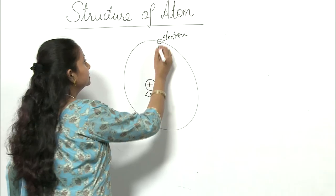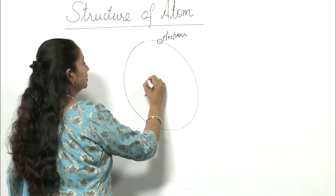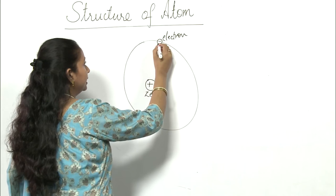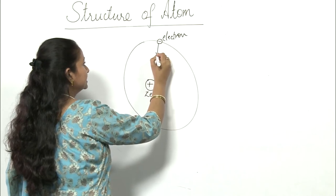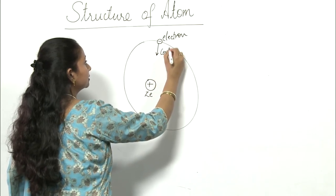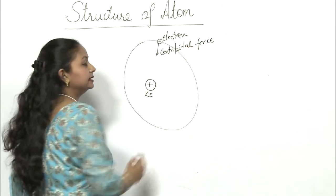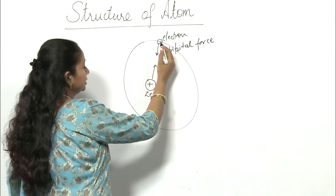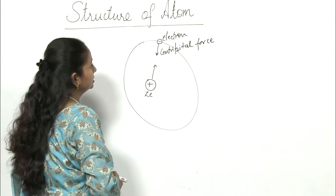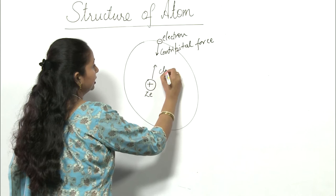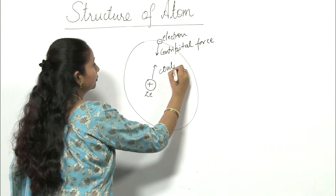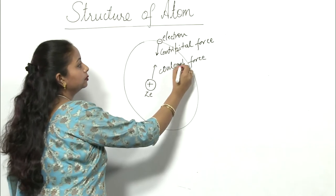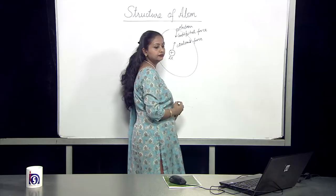Now since the electron is revolving, it will have a centripetal force which is radially inward. And since these electron and the nuclei are positive and negative charges, so there will be a coulomb force. This force will be attractive in nature.